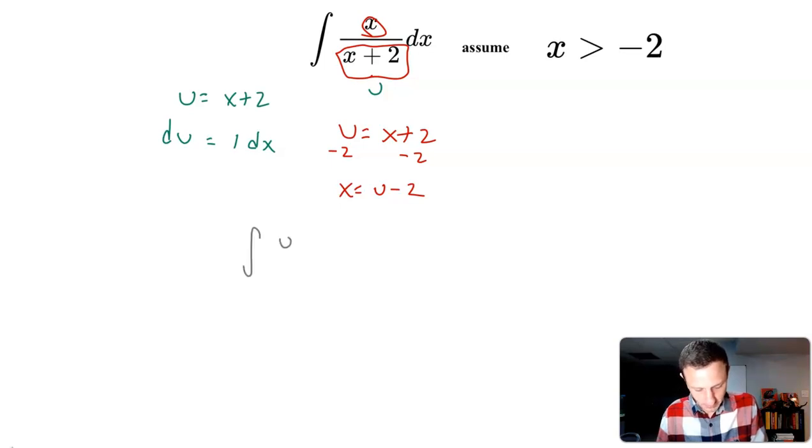u minus 2 over u, because x plus 2 was u, and then dx was just du right here.